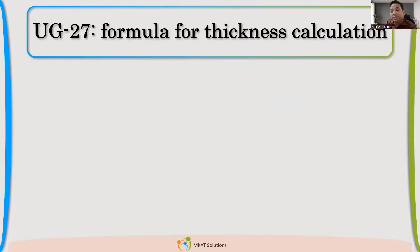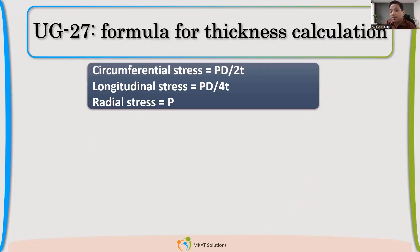So we already know the bookish formula. Before we go to ASME formula, let us try to understand the basic academic formula which you have already learned at college. So circumferential stress is given by PD/2T. We all know that formula. Longitudinal stress, half of that, is PD/4T. Radial stress, which is acting along the radius normal to the wall, that is P, exactly equal to the pressure.